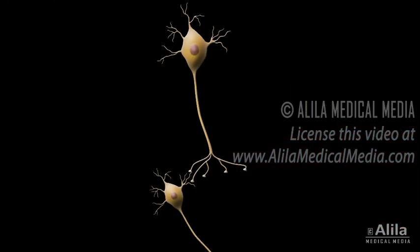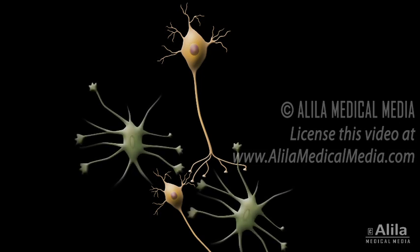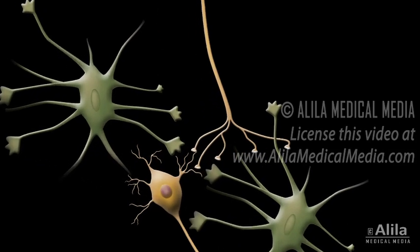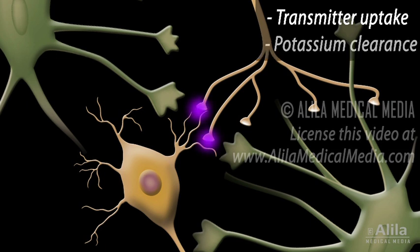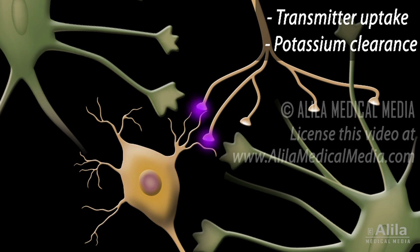Astrocytes help to maintain the chemical composition of the extracellular fluid. They express membrane transporters for several neurotransmitters such as glutamate, ATP, and GABA, and help to remove them from synaptic spaces. Astrocytes also absorb potassium ions released by neurons at synapses, helping to regulate potassium concentrations in the extracellular space. Abnormal accumulation of extracellular potassium is known to cause epileptic neuronal activity.